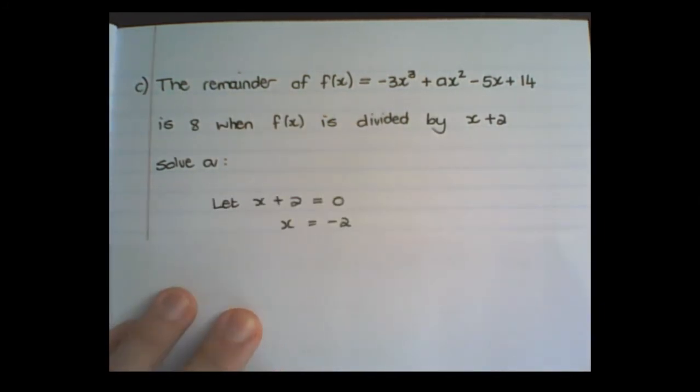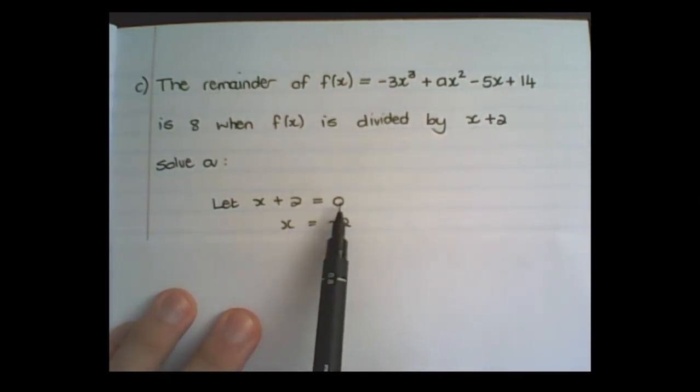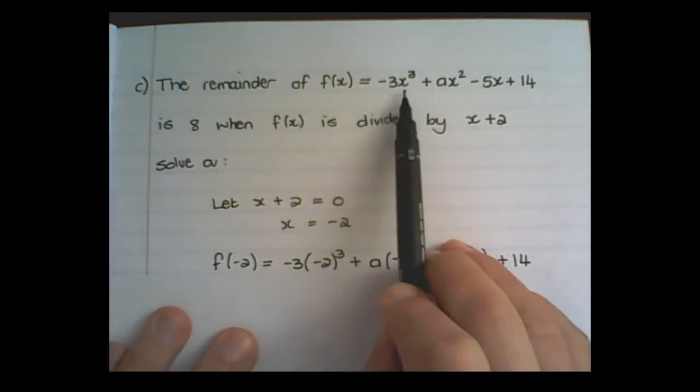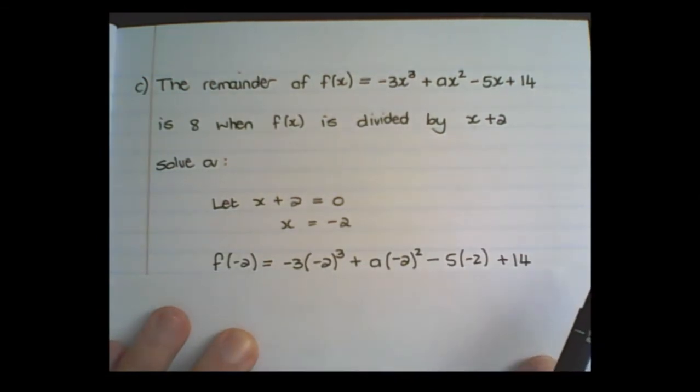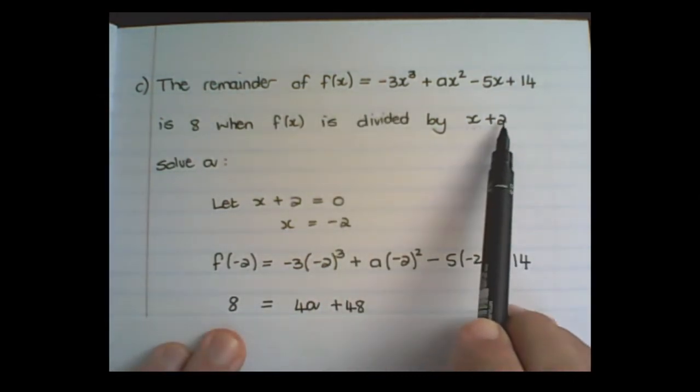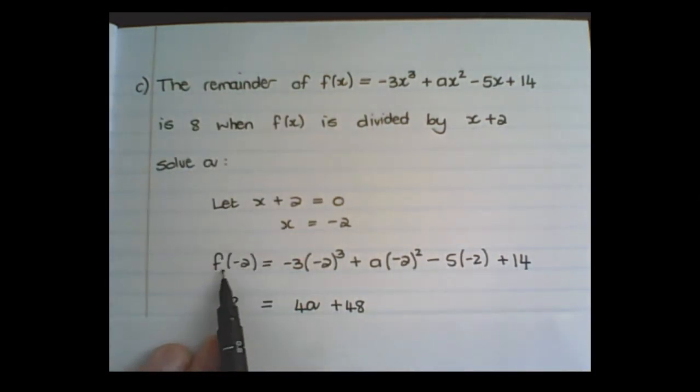We start with the same steps as before. We take this divider and set it equal to 0, then solve for x, which is -2. I substitute the value of -2 into the expression f(x). But we are given that when this expression is divided by x + 2, the remainder is 8. So if I substitute -2 into the expression, the remainder would be 8.